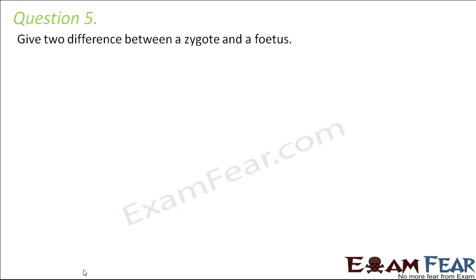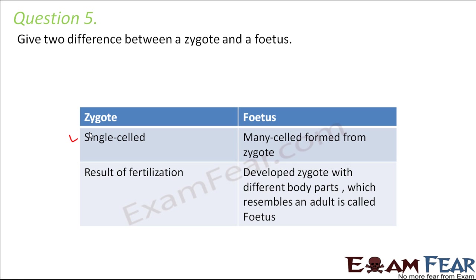Question number 5: Give two differences between a zygote and a fetus. A zygote is the first thing formed after fertilization and is made up of one cell; it later develops further to form an embryo, and that embryo develops to form a fetus. So a zygote is a single-cell structure but a fetus is a many-cell structure with different body parts resembling an adult — for example, a human baby at 6-7 months in the womb has all different body parts; that is a fetus. But a zygote is that one cell immediately formed after fertilization.